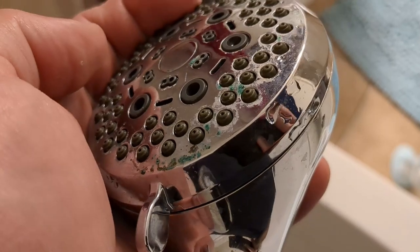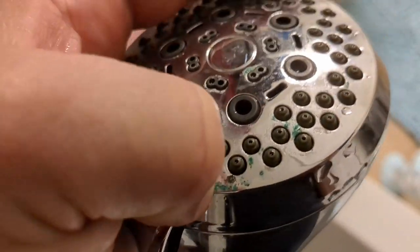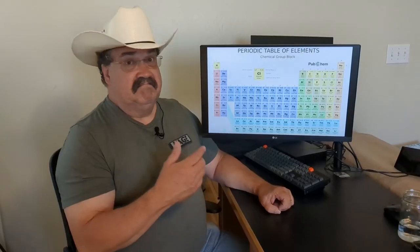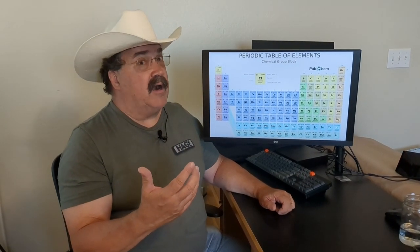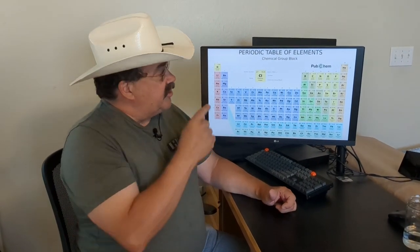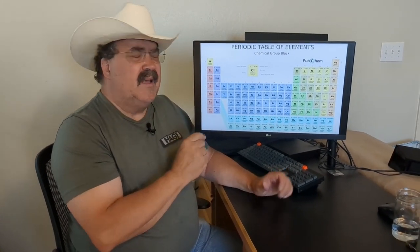The reason why these hard ions attach to the soap molecule more strongly and don't dissolve is because a positive two or three charge has a much stronger attraction than a positive one charge. There are other considerations, but that's a really big part of it. We're going to keep it simple.